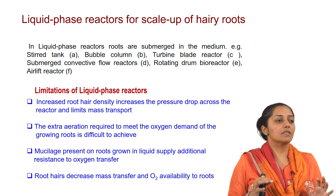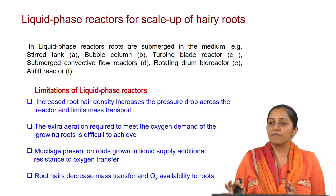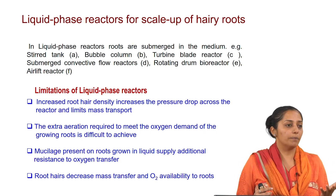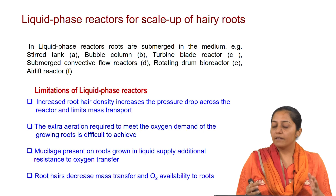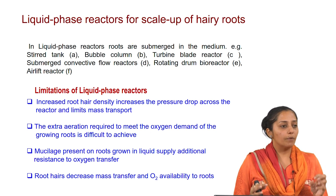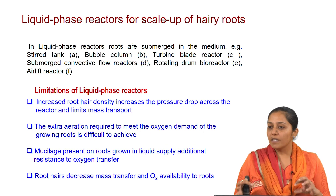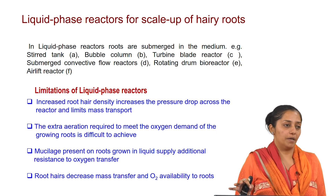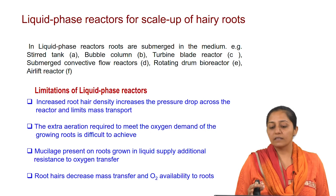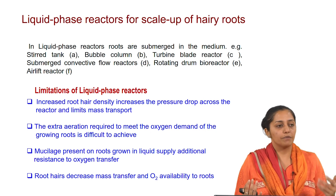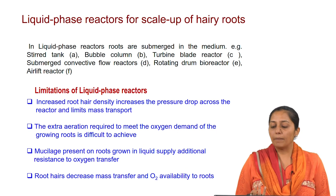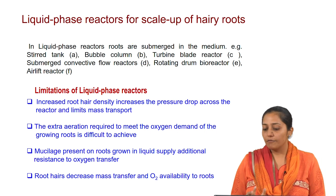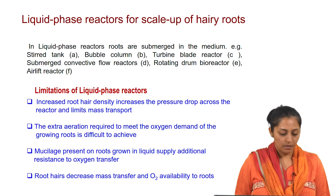The reactors for hairy root cultures are divided into two types: liquid phase reactors and gas phase reactors. Liquid phase reactors are generally the kind of reactors used with microbial or plant cell fermentations. In liquid phase reactors, the gas is the dispersed medium in the liquid. In gas phase reactors, the liquid is the dispersed medium in the gaseous environment. Liquid phase reactors include stirred tank, bubble column, submerged convective flow, rotating drum, and air lift reactors.